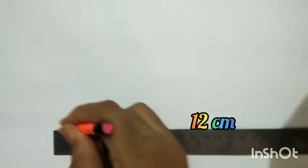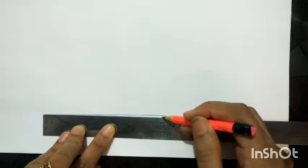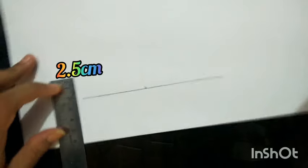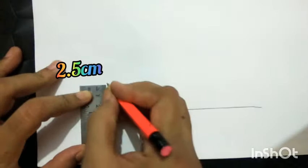Draw a line of 12 centimeters at the bottom of the page. 12 divided in half is 6. Take a 2.5 point on each side.